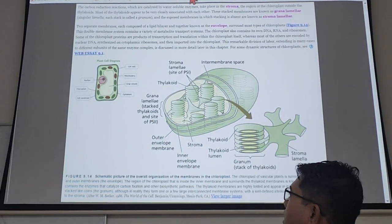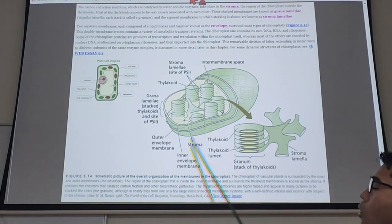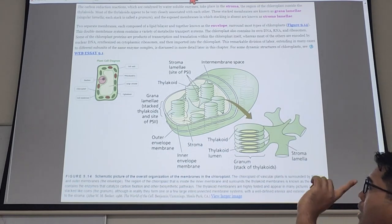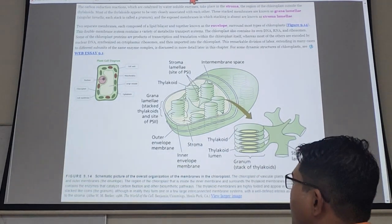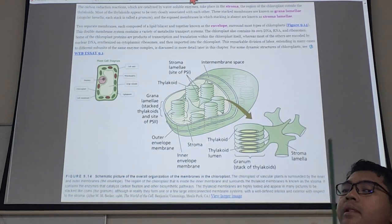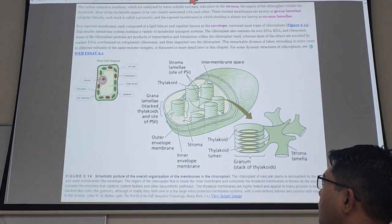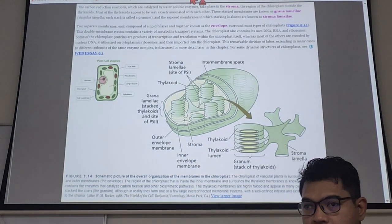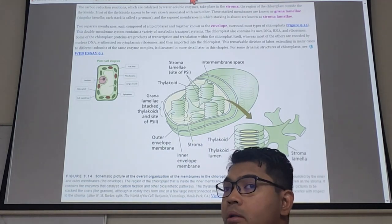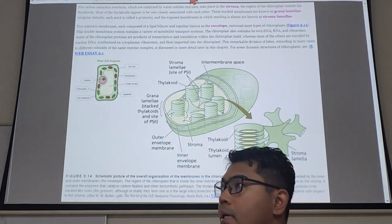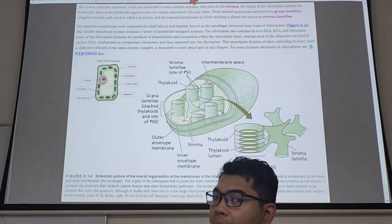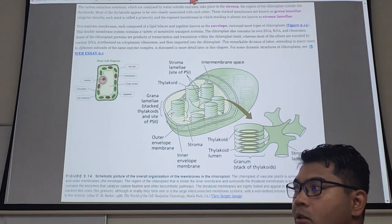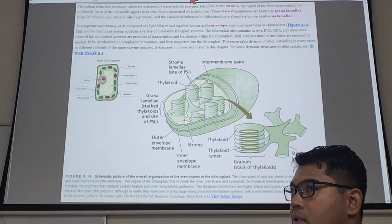Enlarge this and you get this. Number one: chloroplast double membrane. Please remember that it's the outer membrane and inner membrane that enveloped the entire thing. And in between the membrane there is an intermembrane space. This is very important because not all substances can go in and out into the chloroplast. It's kind of highly regulated.